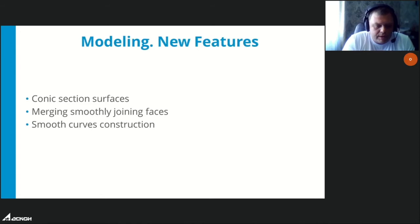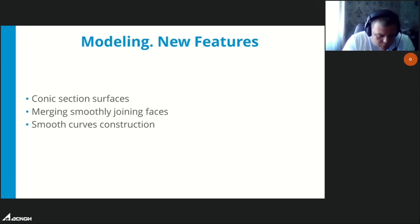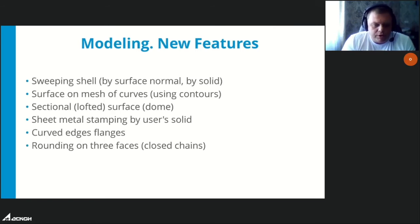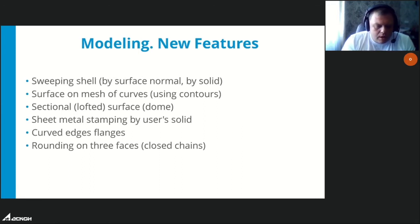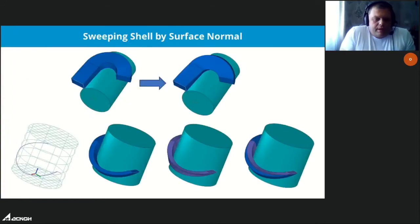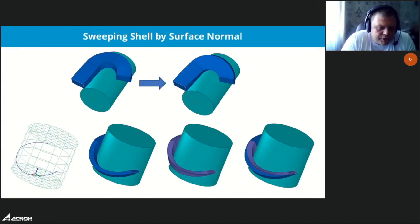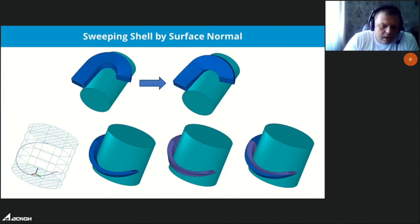The main new features for surface modeling are conic section surfaces, smoothly joining faces, and construction of smooth curves. Additionally, there are new functionality elements in the sweeping shell operation, surface from curve mesh, the lofted surface feature in sheet metal, and fillet or rounding features. In the sweeping shell operation, you can now explicitly control the movement of the generation element in accordance with the normal of the surface the guide curves lie on.